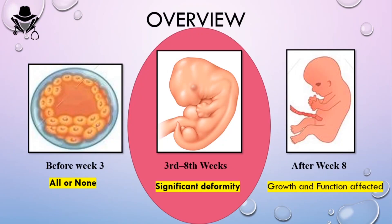In the first three weeks after conception, you have the all-or-none phenomenon — either the baby dies or there is no effect at all on the fetus. In the second duration, from week three to week eight, the fetal body organs are developing. Any agent that can cross the placenta during this period can cause a significant deformity.